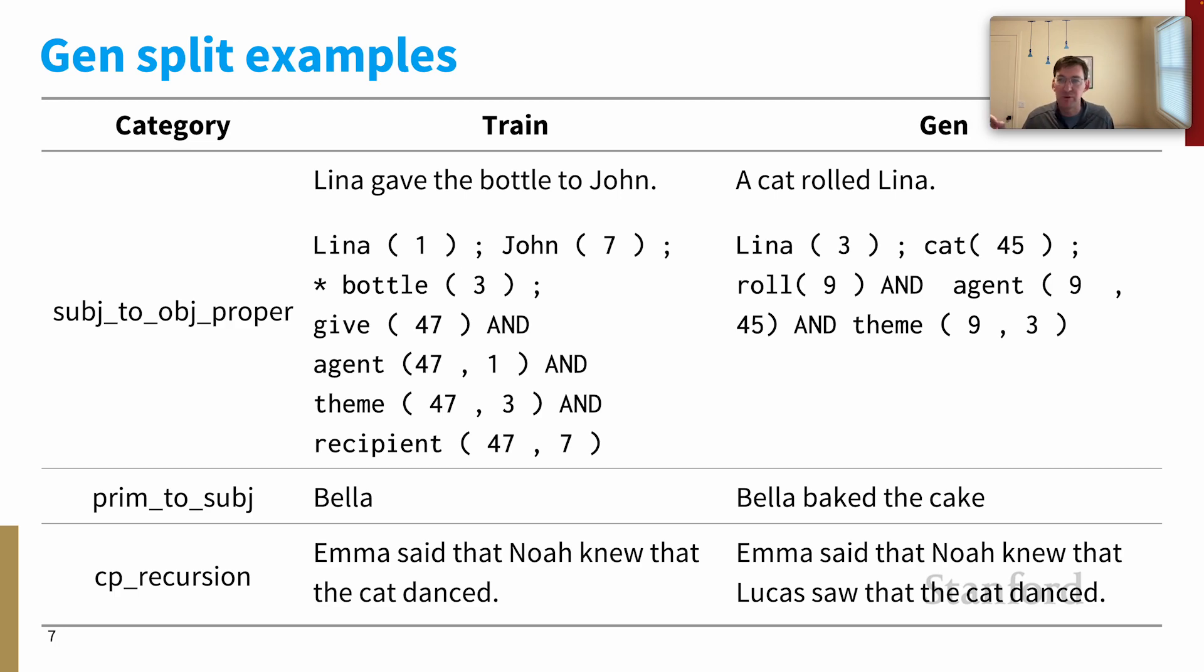Very simple for people, surprisingly difficult for our models. Primitive to subject is a similar sort of situation. At train time, there are some names that just appear as isolated elements with no syntactic context around them. At generalization time, we have to deal with them as the subjects of full sentences. It seems simple, but it proves challenging.